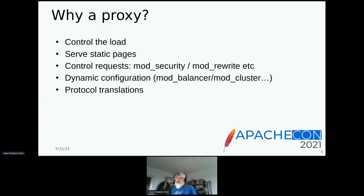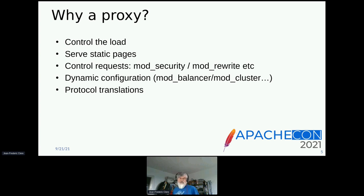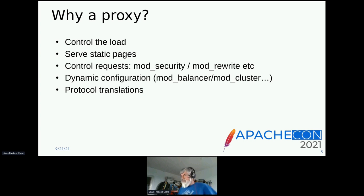You have a kind of dynamic configuration. For example, mod_balancer has some extensions that allow you to add dynamically a Tomcat to a running HTTPD. And mod_cluster is something that was done by JBoss in the past, and it also allows some dynamic configuration. The proxy is mostly used to make protocol translation too — like translating HTTP 2 to HTTP 1.1, or doing the termination of TLS.